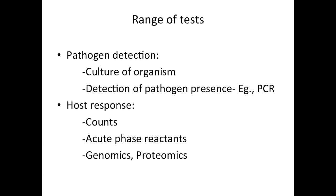There are various tests. Some tests are based on pathogen detection and some other tests are based on host response to infection. Culture of organism — the blood culture — is the gold standard for diagnosing neonatal sepsis. Other pathogen detection tests include polymerase chain reaction. Certain tests such as blood counts, acute phase reactants, genomics, and proteomics associated with sepsis are based on the host response to infection.